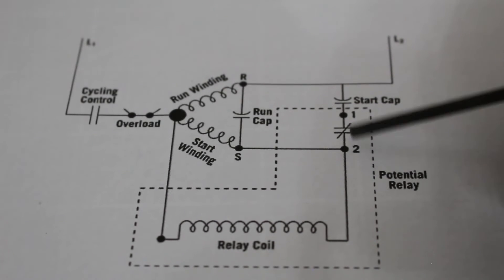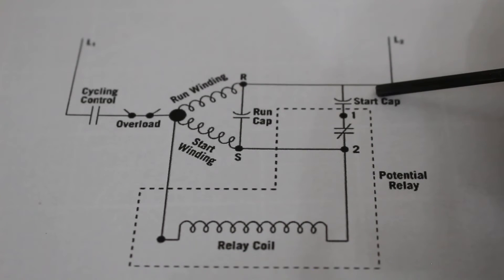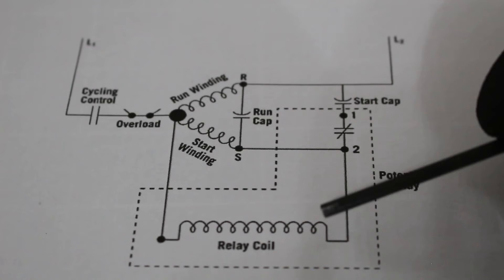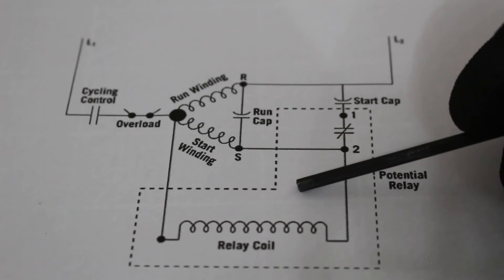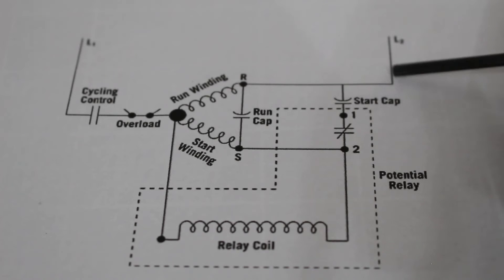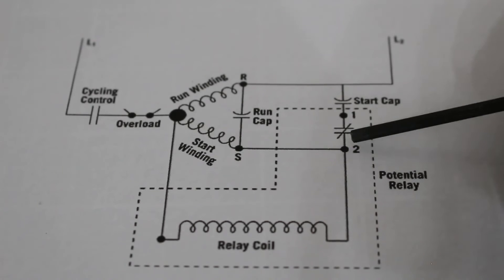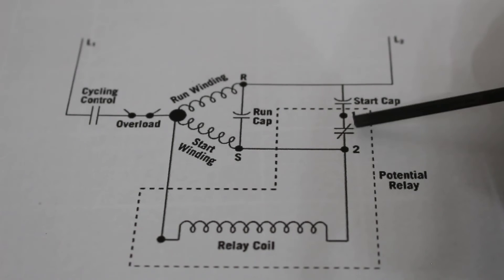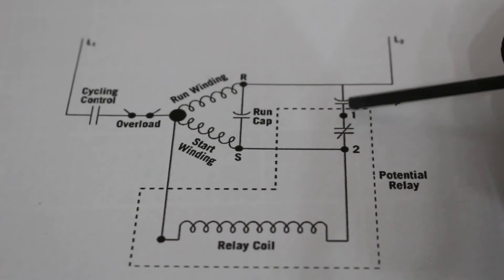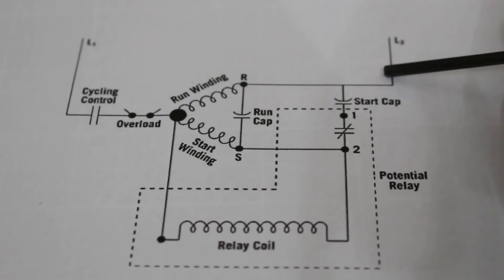What happens is that once your compressor is up to speed, we want to get rid of the start cap. And how that happens is something called a back EMF. EMF stands for electromotive force. So, each relay is calibrated to a specific EMF. So, what happens is that once the compressor is up to speed, that EMF is going to travel back and it's actually going to open the set of contacts. And once the set of contacts is open, there's no more flow to the start cap. So, now your system is just constantly running through your run cap and the system runs.